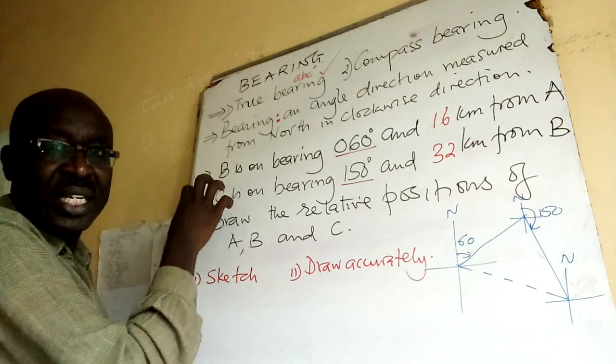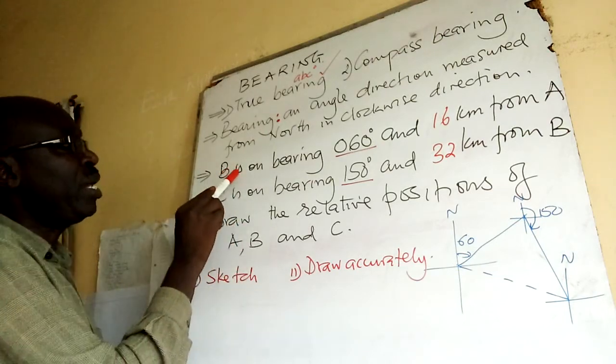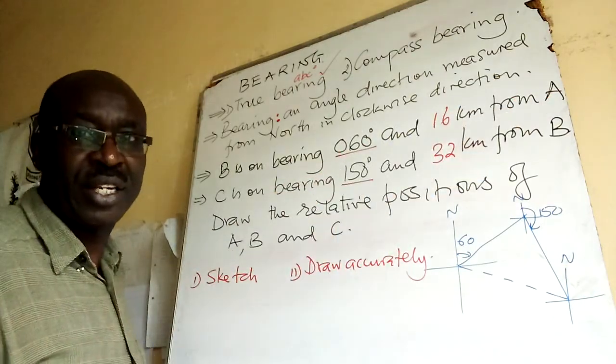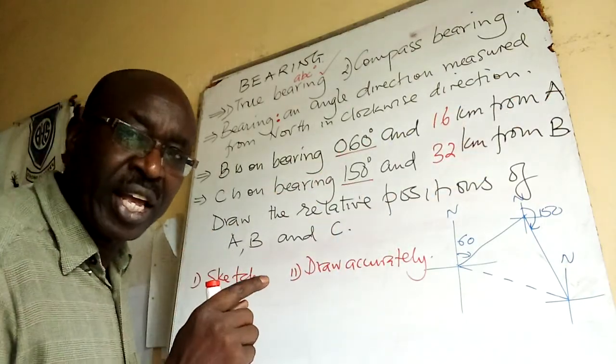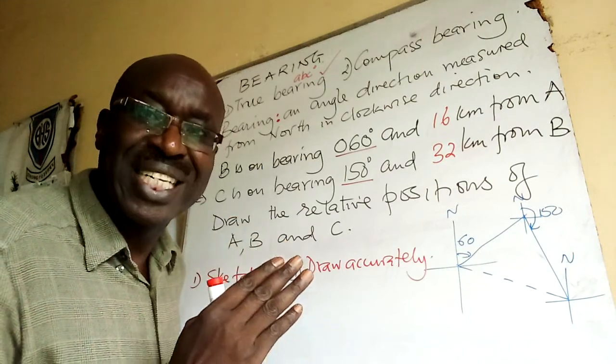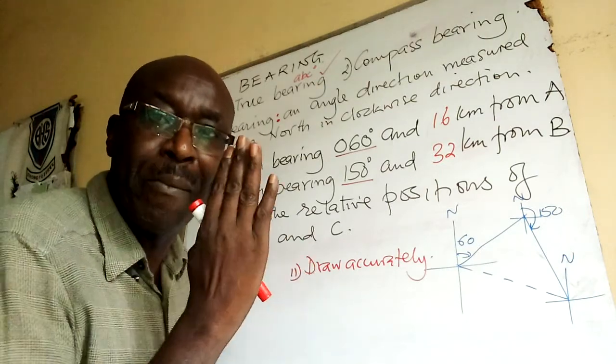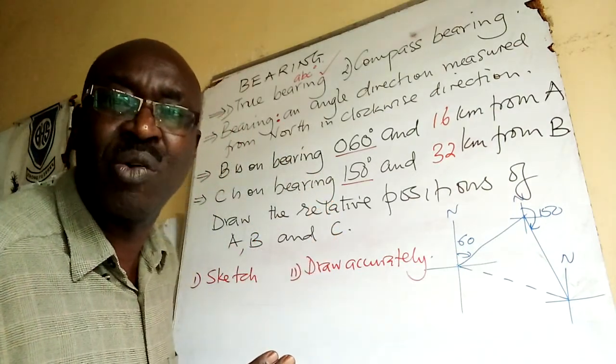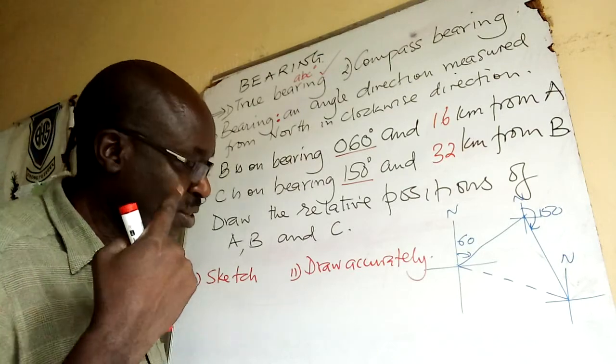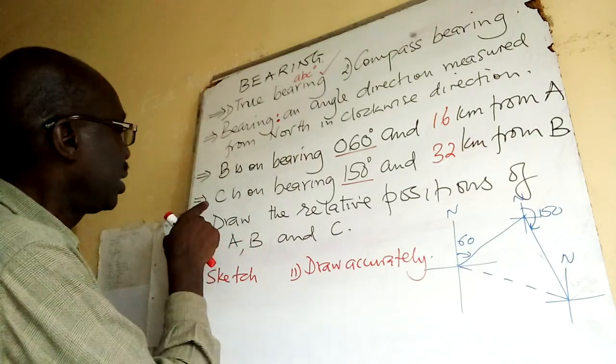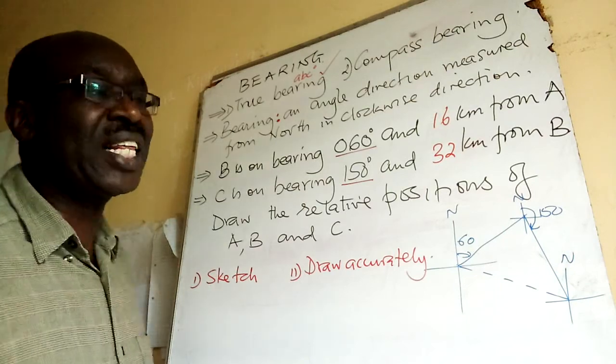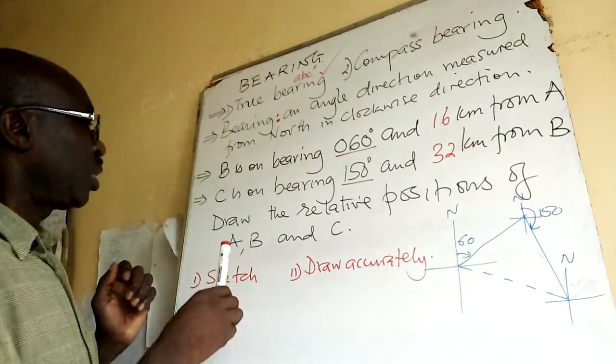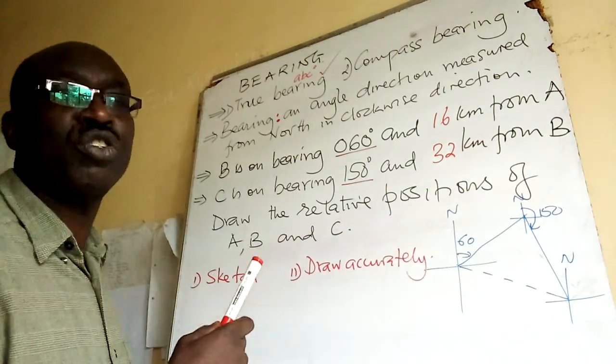Now, let us try to get an example. Here. B is on bearing 060 and 16 kilometers from A. B is on a direction of 60 degrees measured from north and it is 16 kilometers from A. Here. C is on bearing 150 and 32 kilometers from B. Draw the relative positions of A, B, C.